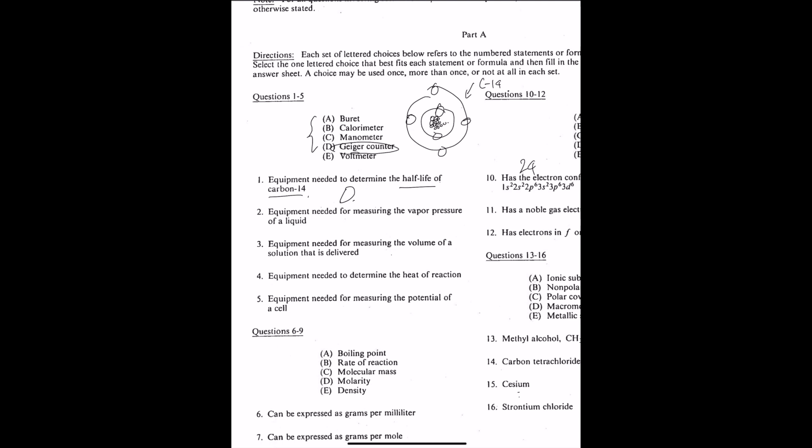Number two, equipment needed for measuring the vapor pressure of a liquid. Among these choices, the only thing related to measuring pressure is probably the manometer. So what a manometer is, it's basically a tool that you use to measure pressure. So let me draw a quick diagram. Therefore, the answer would be C.